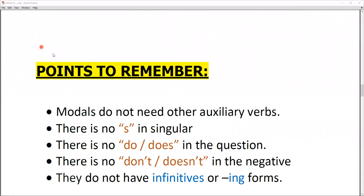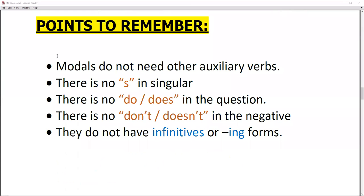Points to remember. There are some points that we will remember while using the models. Modals do not need other auxiliary verbs. As we read, there are two kinds of auxiliary verbs. First is primary, and second is model. Primary verbs: is, am, are, was, were. So we will not use them. What do we use? Only model auxiliary.